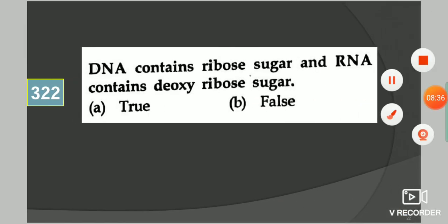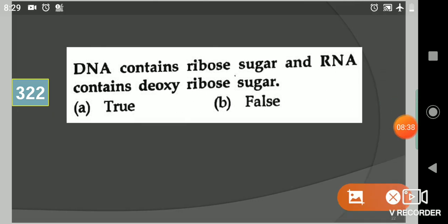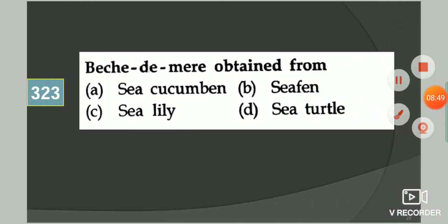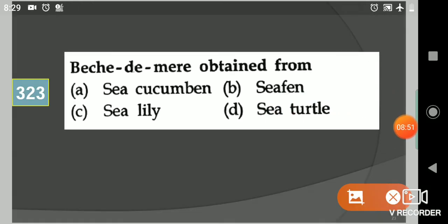Come to the next question: DNA contains ribose sugar and RNA contains deoxyribose sugar. Your options are true or false. Your answer is false.